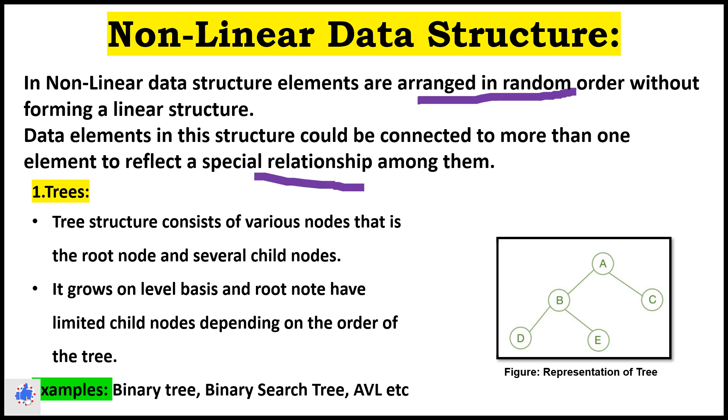First is tree. Tree structure consists of various nodes, that is the root node and several child nodes. Root node, consider A as a root node and B, D, E, C are the child nodes. It grows on level basis and root node have limited child nodes depending on the order of the tree.